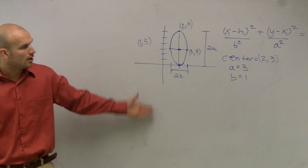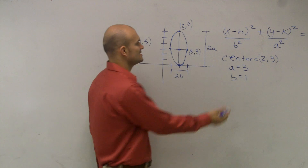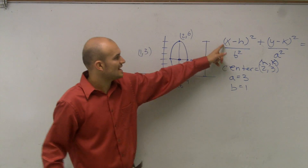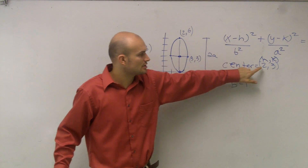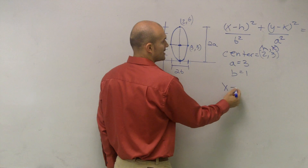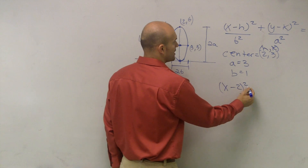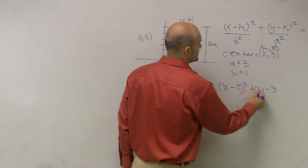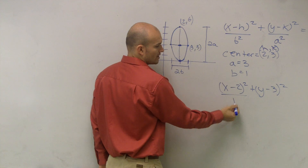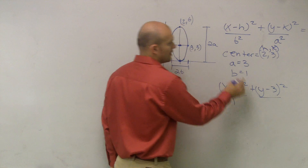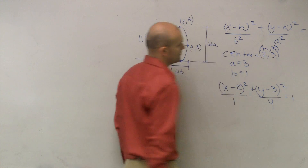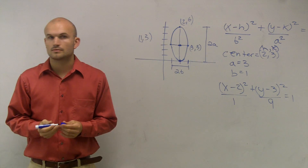So all I'm going to do now is plug in the values. Remember, the center is h and k. So x minus h becomes x minus 2. The final form is: (x minus 2) squared over b squared, which is 1 squared equals 1, plus (y minus 3) squared over a squared, which is 3 squared equals 9, and that equals 1. And there we go — that's it.